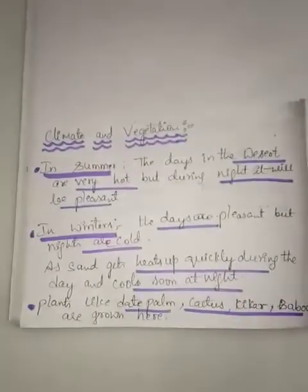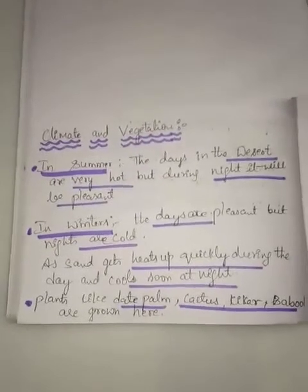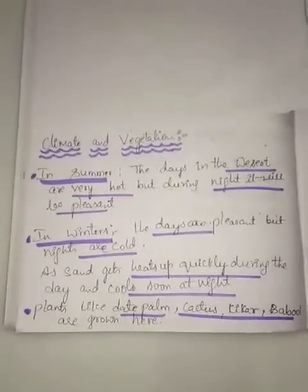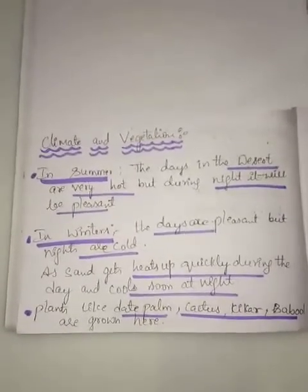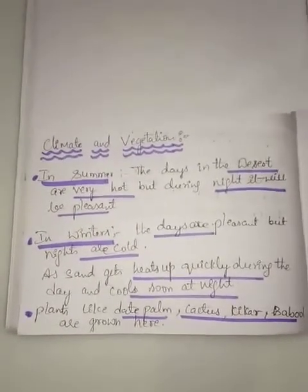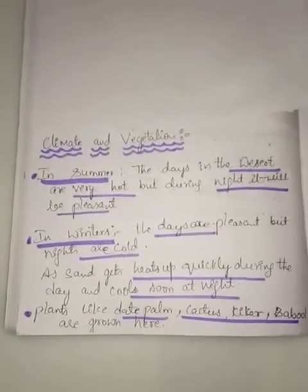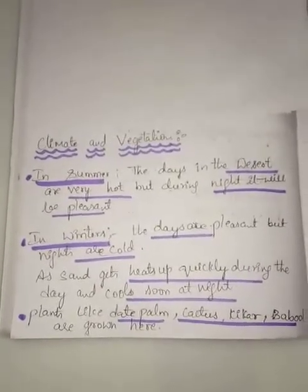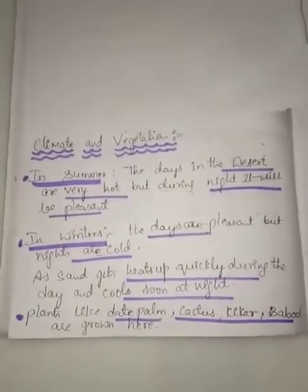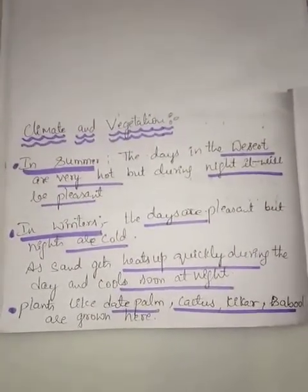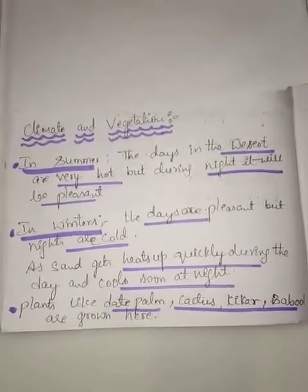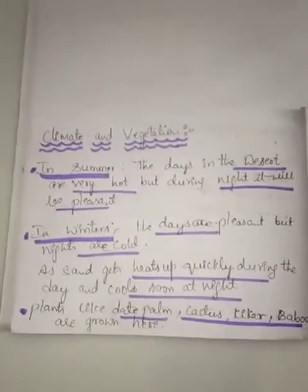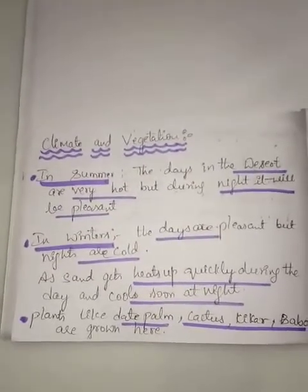Now the next topic: so far we studied the location and the region, and now we will learn about the climate and vegetation — how the weather and climate of the region will be. In summer, the days will be very hot and during the night it will be pleasant, whereas in winter the days will be pleasant but the nights will be cold.